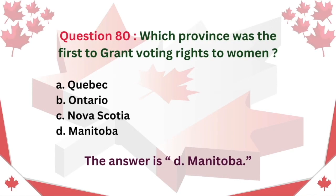Question 80. Which province was the first to grant voting rights to women? A. Quebec B. Ontario C. Nova Scotia D. Manitoba. The answer is D. Manitoba.